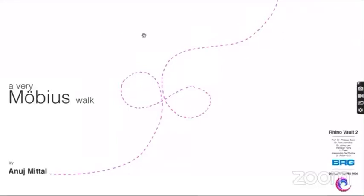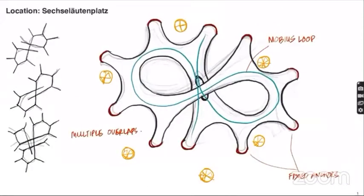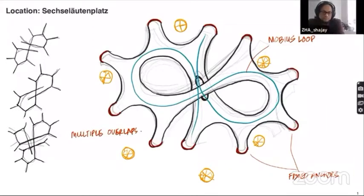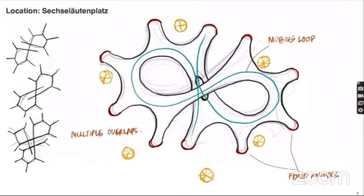I'm calling my project a Very Mobius Walk. The site I'm choosing, and for my site constraints, I was looking at the six umbrellas that were given on the site, and how I could incorporate the form within this, but also make the form overlap with each other and try to connect and support each other, even when the curves are going around themselves, which was a very tough challenge.